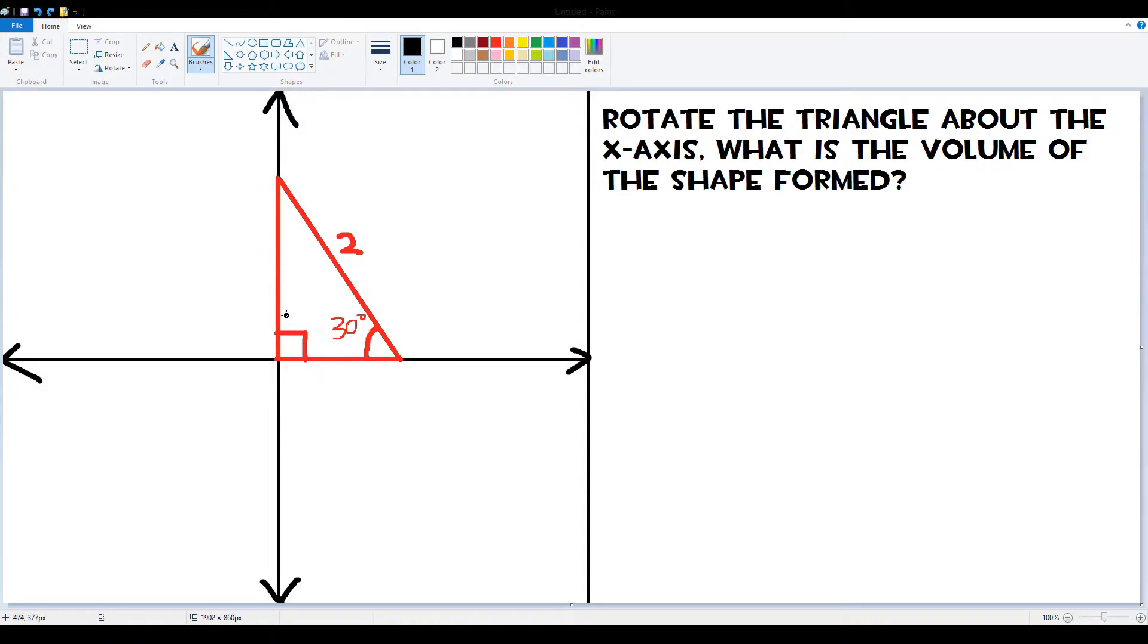It's 30, 90, and then that angle is 60 because the sum of the interior angles for a triangle is 180. Then minus the known angles, which are 90 and 30, that's a 60.